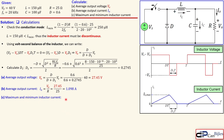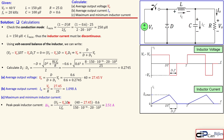The maximum and minimum inductor current are important to consider. From the graph, the minimum inductor current is zero (since the current touches zero in DCM), and the maximum equals the peak-to-peak inductor current. Substituting Vs, the output voltage, duty cycle, and other parameters into the peak-to-peak formula gives 2.51 amps. So I_L_max = 2.51 A and I_L_min = 0 A.